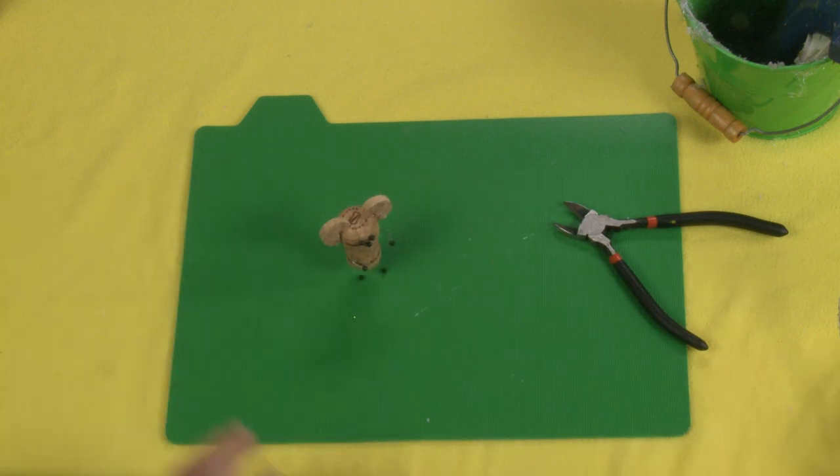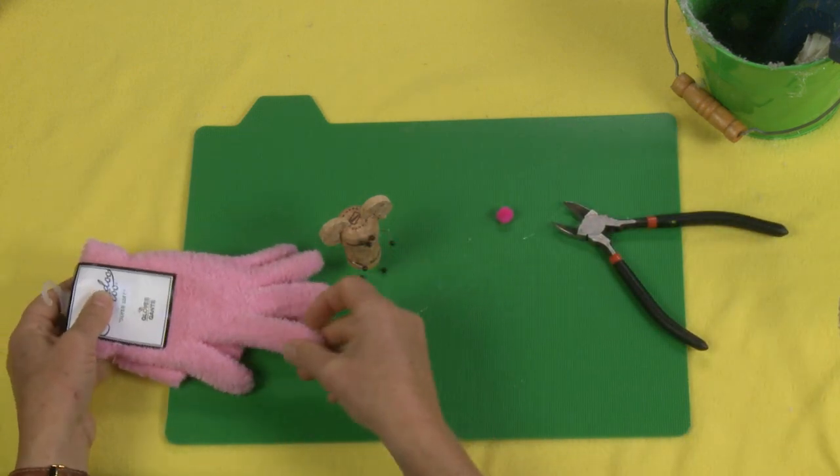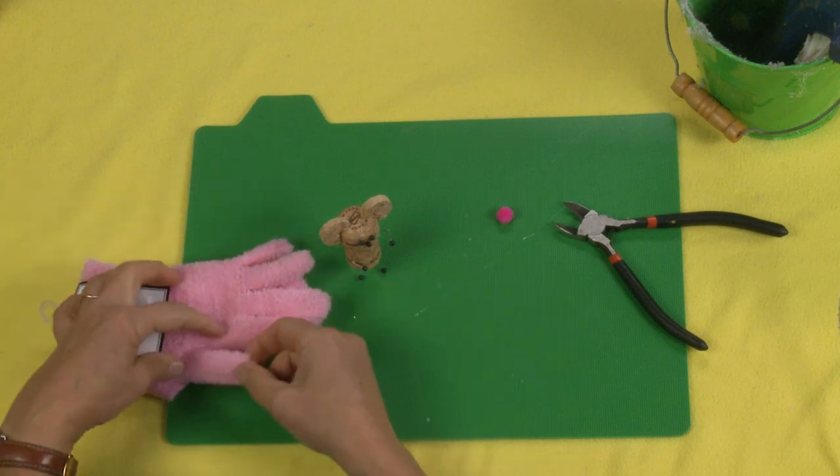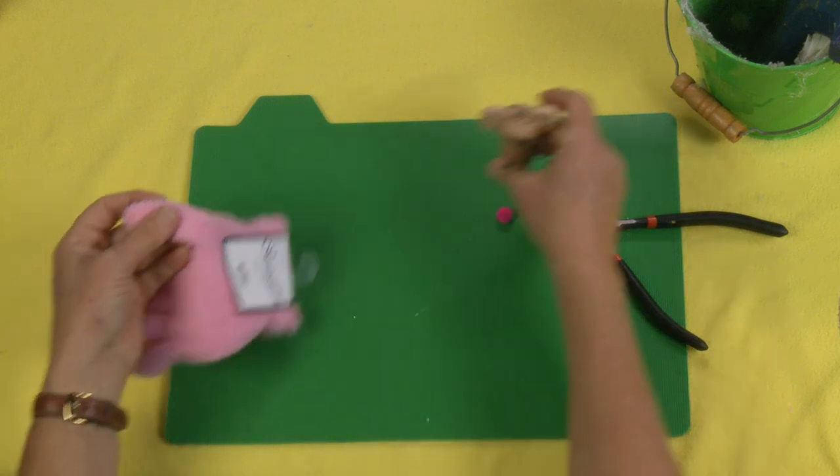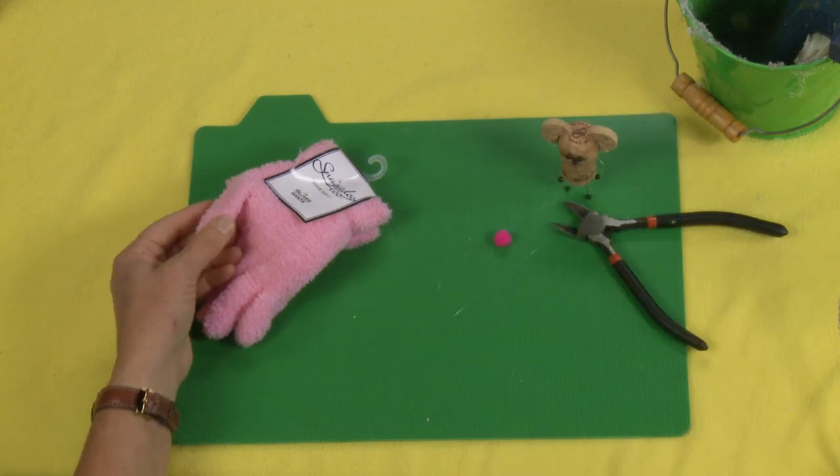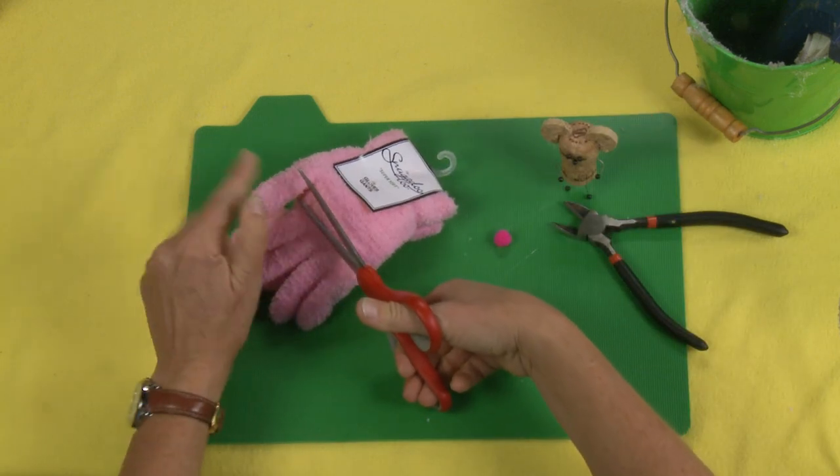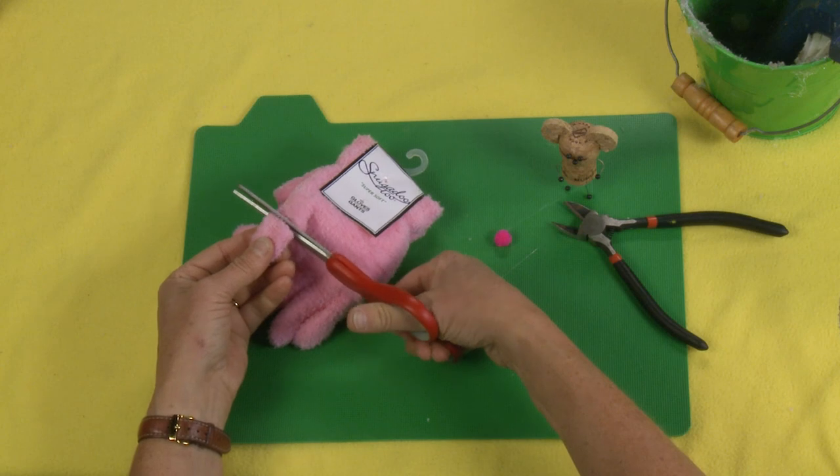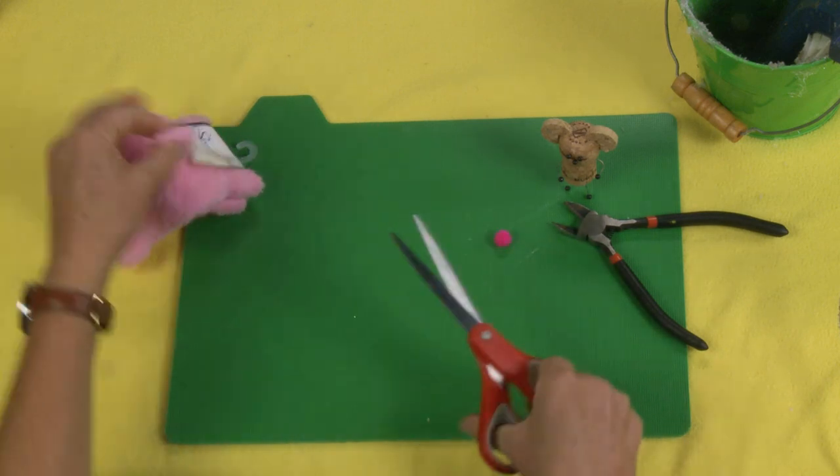Now, to make this a she-mouse, she gets an outfit. So I've got my pom-pom there. We're going to be using a stretchy glove for this. These stretchy gloves are fantastic. First thing I'm going to do is make her a hat. And to do that, I'm just going to take my scissors and cut the tip off of the glove.